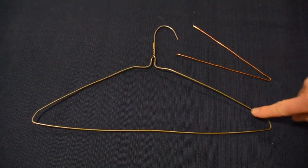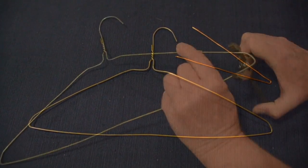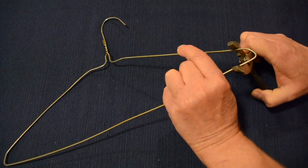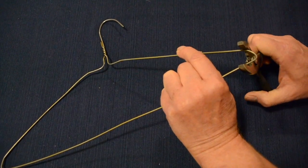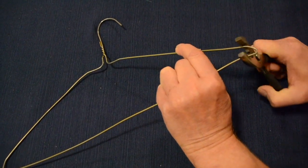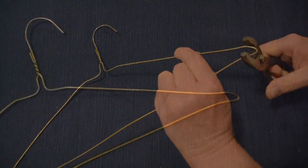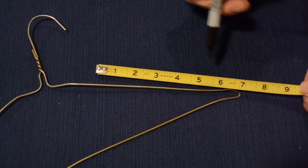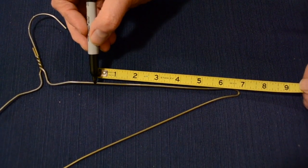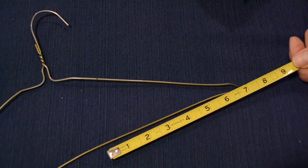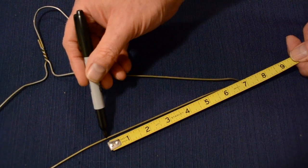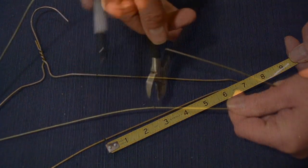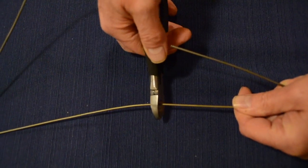Instead of copper wire you can use metal coat hangers. You can make your v-shaped pieces from the corners. Tighten the corner with a pair of pliers. Just measure seven inches each way and cut. It can be a little tough.